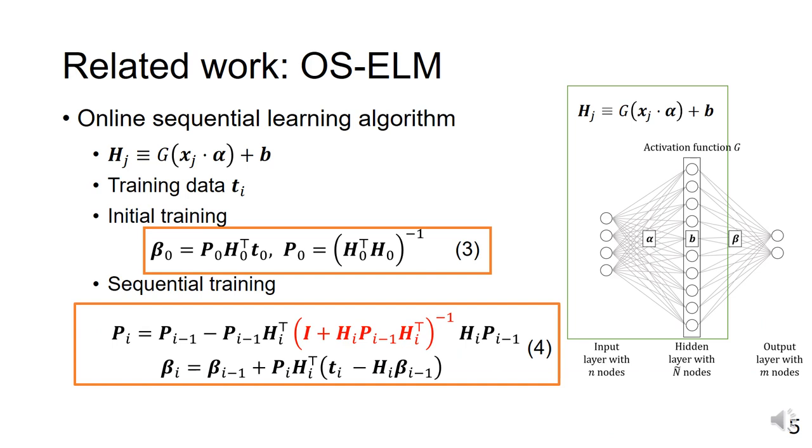OS-ELM uses a three-layer neural network, as shown in the figure. The first layer α is fixed with random weights, and only the layer β is trained at runtime.